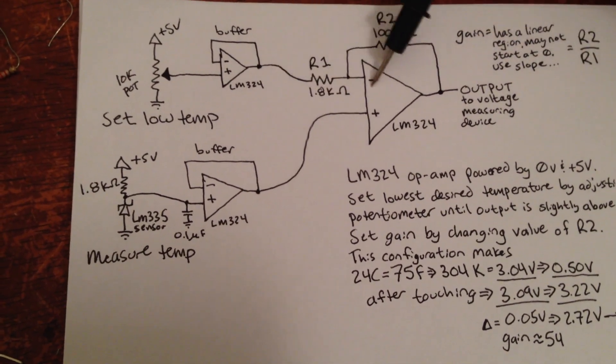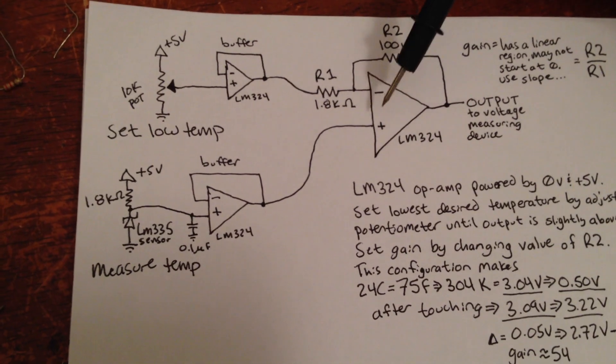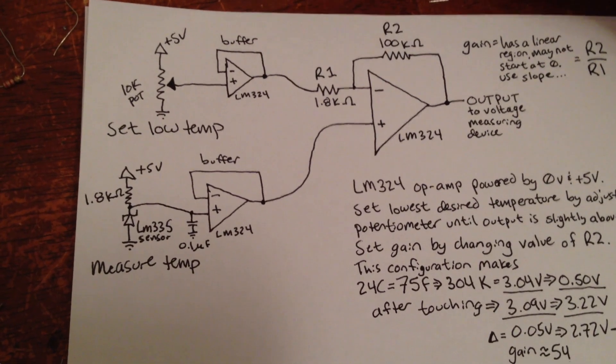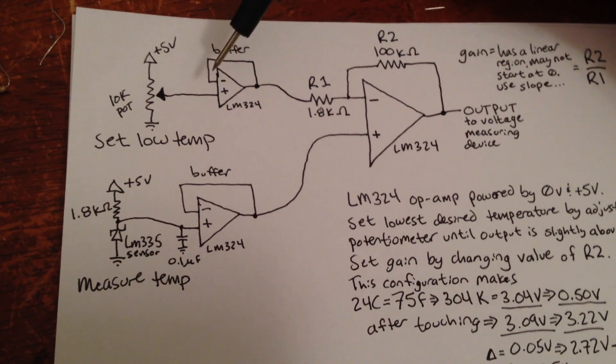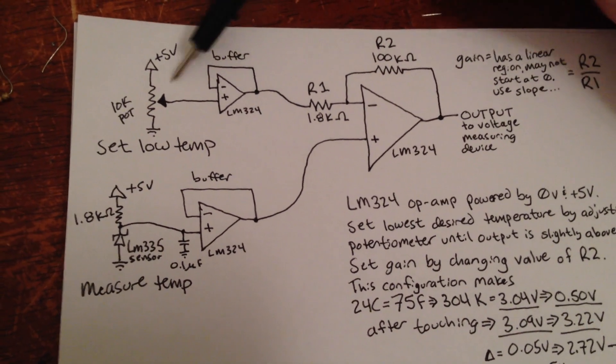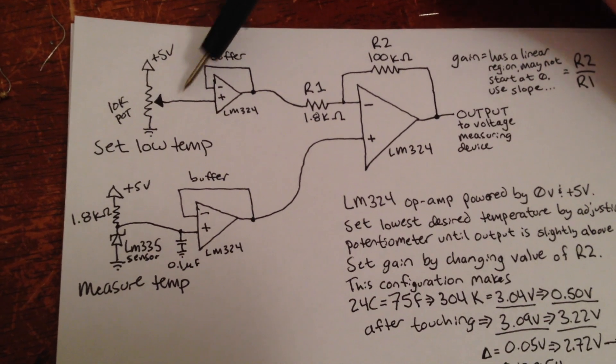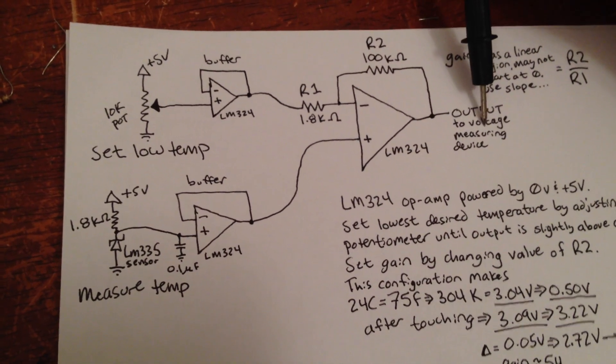It goes through a buffer stage and goes through the positive input. And the negative input is what I use to set the minimum desired lowest temperature. In other words, I want to measure between room temperature and my finger temperature. I adjust this potentiometer so that the output becomes 0. And I can do that here.